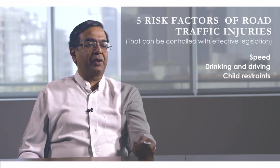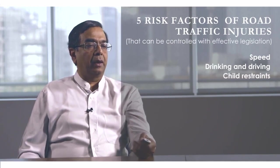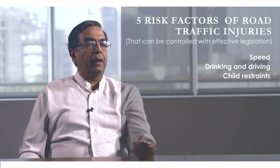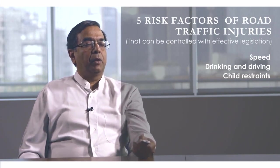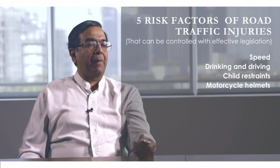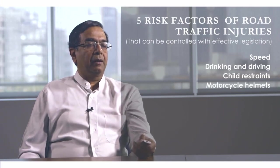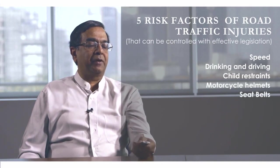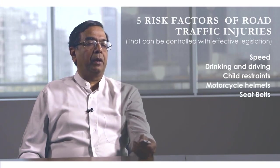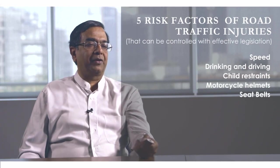Applying child restraints in cars prevents children from tossing around and getting injured in a speeding vehicle. Motorcycle helmets must be made mandatory everywhere to prevent head injuries. Seat belts have also made a great difference to the degree and number of injuries sustained during road traffic accidents.